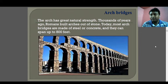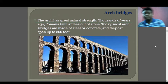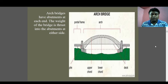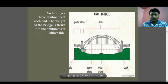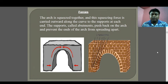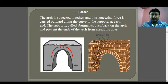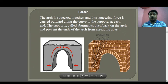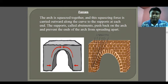In the arch bridge you can find the upper chord, lower chord, deck, pile, and the arch itself. The forces in an arch bridge: arcs are squeezed together and this squeezing force is carried outward along the curve to supports called abutments at each end. The abutments push back on the arch and prevent the ends from spreading.